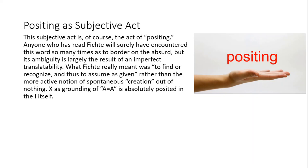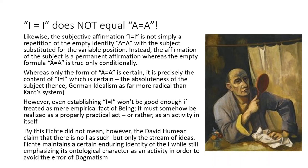Now, anyone who has read Fichte will surely have encountered that word so many times as to border on the absurd, but its ambiguity is largely just the result of an imperfect translatability. What Fichte really meant was to find or recognize, and thus to assume as given, rather than the more active notion of a spontaneous creation out of nothing. X as the grounding of A equals A is therefore absolutely posited in the I itself. Likewise, this subjective affirmation — I equals I — is not simply a repetition of the empty identity A equals A with the subject substituted for the variable. Instead, the affirmation of the subject really is different. This is a permanent affirmation, whereas the empty formula A equals A is true only conditionally. It is precisely the content of I equals I which is certain. This is the absoluteness of the subject, and hence a brand of German idealism far more radical than anything you find within Kant's system.